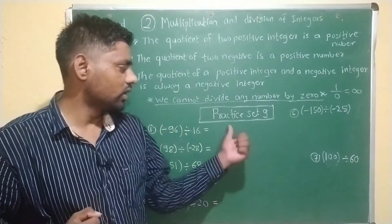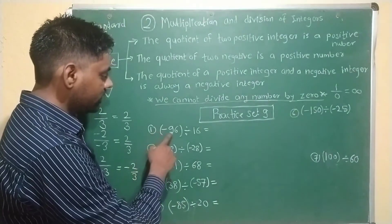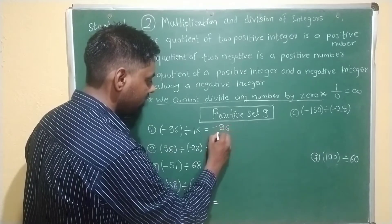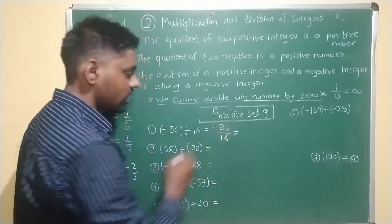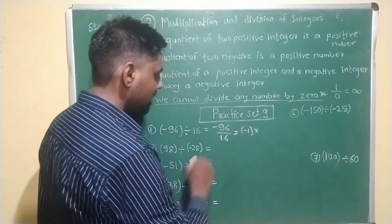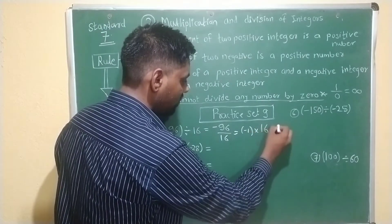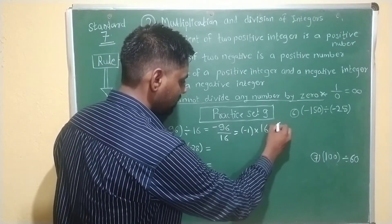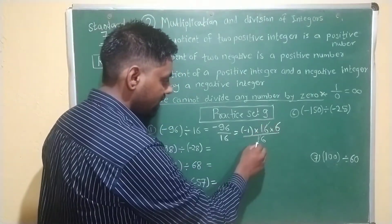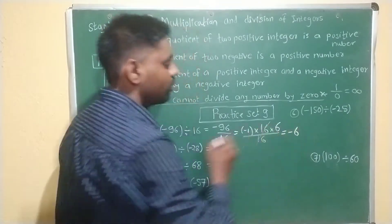Let us start and solve practice set 9. First example: minus 96 divided by 16. We write minus 96 divided by 16. Here minus sign is given, so minus 1 multiplied by 96. Since 96 equals 16 into 6, dividing by 16, the 16 gets cancelled. Minus 1 multiplied by 6 is minus 6.